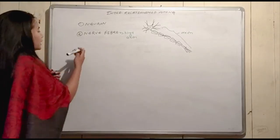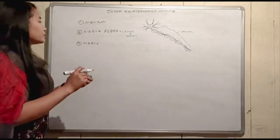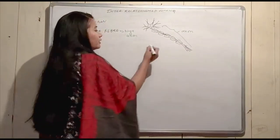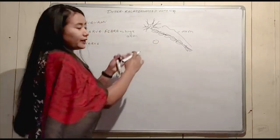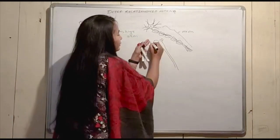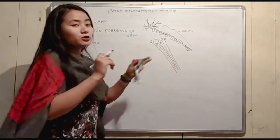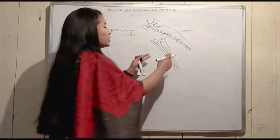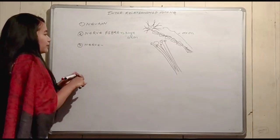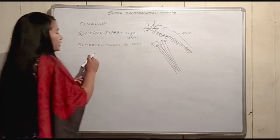A bundle of nerve fibers together is called a nerve. You can see here the cell body, the axon, and the axon portion. When multiple axons are bundled together, that bundle is called a nerve.